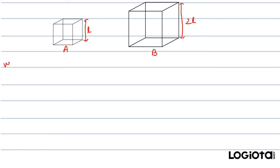Now let's count the number of vertices for the first box. For box A, it is 8, and for box B also it is 8. So you can say that the number of vertices doesn't depend upon the length of the edges or the size of the box. We can say that the number of vertices is proportional to L raised to the power 0, because something raised to the power 0 is 1.